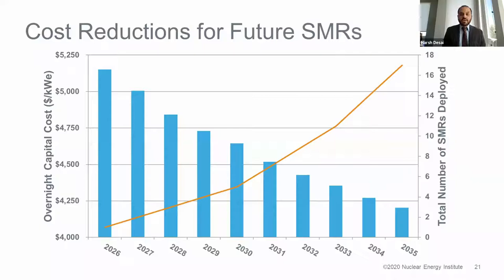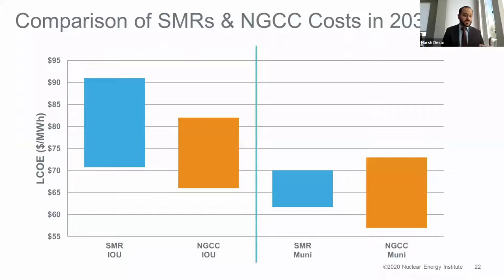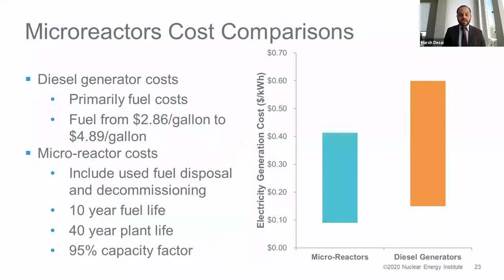Whether it's an investor-owned utility like Exelon or Duke, versus a municipality like Nebraska Public Power Project that owns Cooper Nuclear Power Plant, there are differences in cost due to cost of capital and financing. But these SMRs do become very cost competitive to the next competitor on the market, which would be a natural gas combined cycle plant. For micro-reactors, their competitor is diesel generators, and our economics tell us they would be highly competitive in those markets.